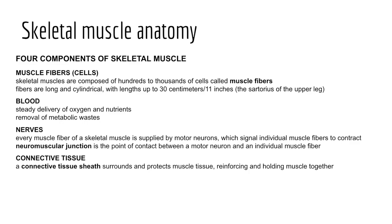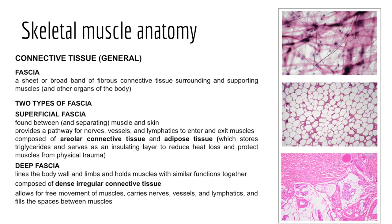Skeletal muscles also have connective tissue that surrounds and protects muscle tissue. Let's look at the various types. First, fascia is a sheet or broad band of fibrous connective tissue that supports and surrounds muscles and other organs. We have two types: superficial fascia, which separates muscle from skin and is composed of areolar connective tissue as well as adipose tissue. The adipose tissue stores most of the body's triglycerides, serves as an insulating layer to reduce heat loss, and protects muscles from physical trauma.